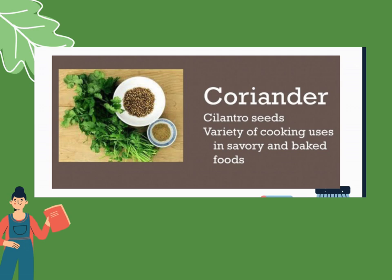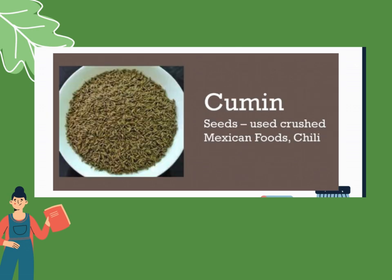Next, coriander — it is cilantro seeds. You can use this for a variety of cooking — in savory and baked foods. Next, cumin — it is seeds, used crushed in Mexican dishes or with chicken. Cumin comes in powder or dry form, and it has a strong aroma. It is usually added to Mexican food.